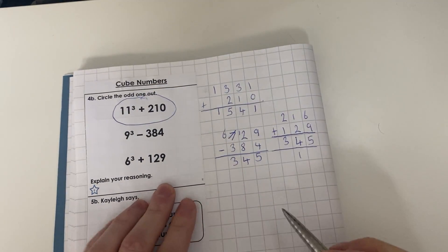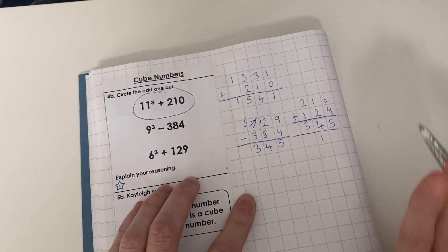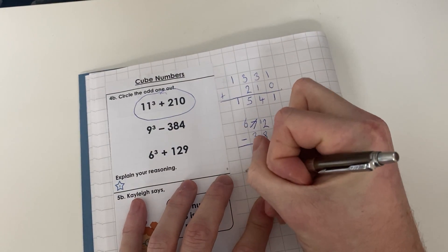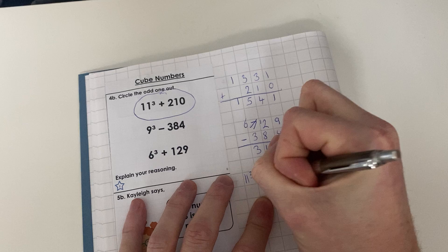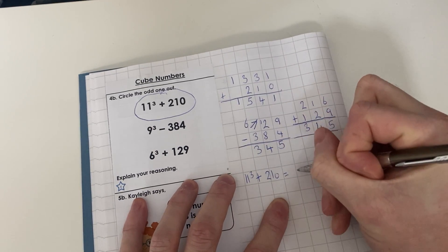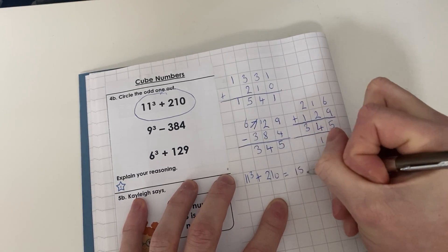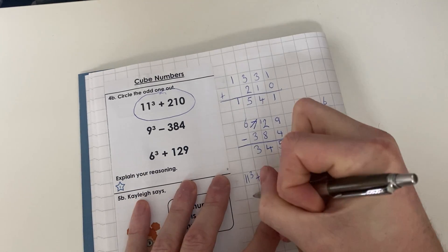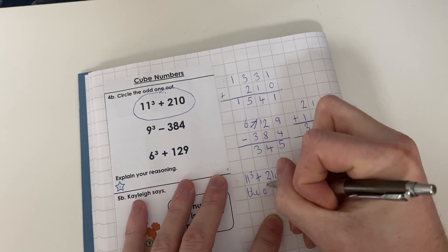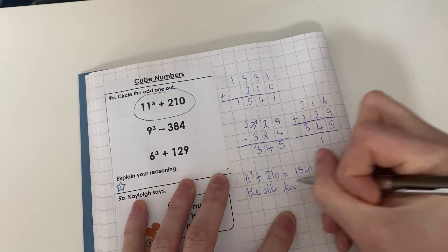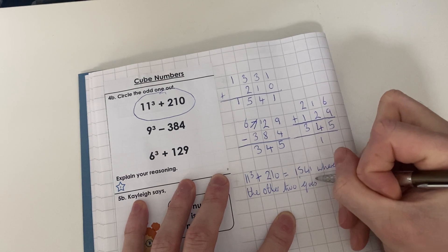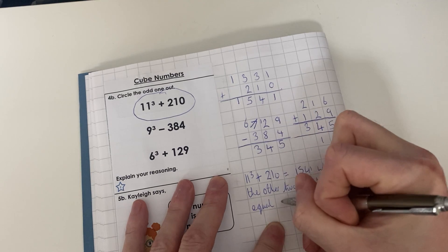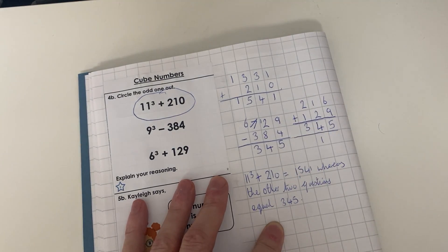Explain your reasoning and write a short sentence. 11³ + 210 = 1541, whereas the other two questions equal 345. Very simple.